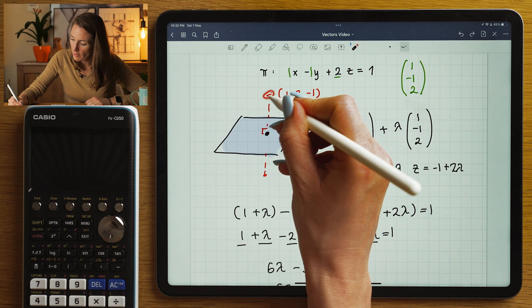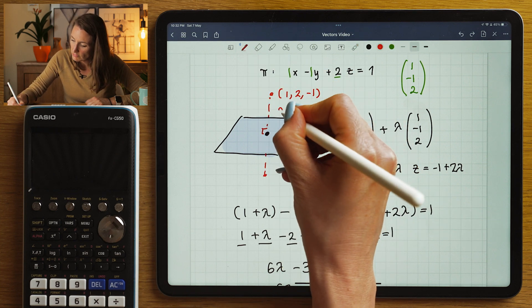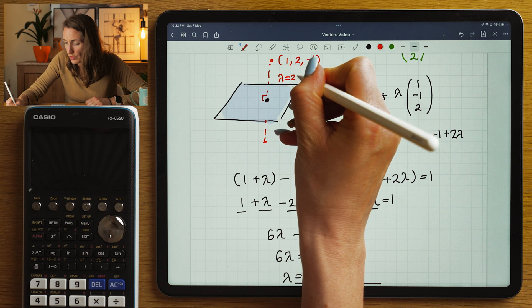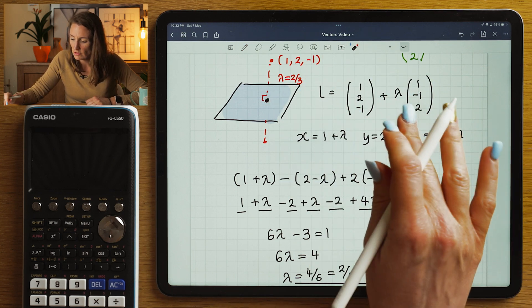That means I can work out this specific vector because I know in order to reach the plane, I must have lambda to be exactly two thirds. If I wanted to, I could find this point, but it's actually not so useful.